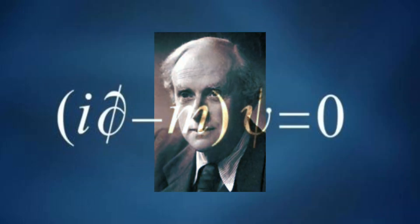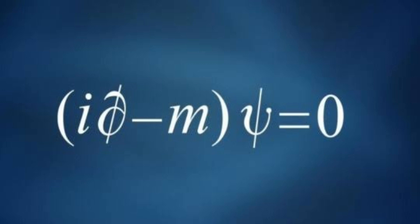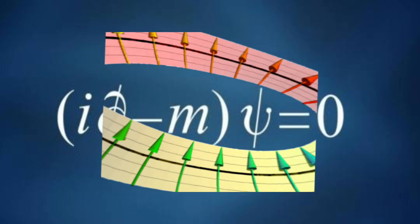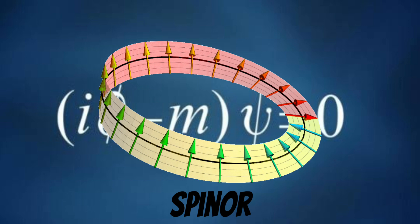The Dirac equation is a cornerstone in the foundation of quantum physics, highlighting his profound impact on the field. The equation introduced a four-component wave function, known as a spinor, which could describe the behavior of relativistic particles.